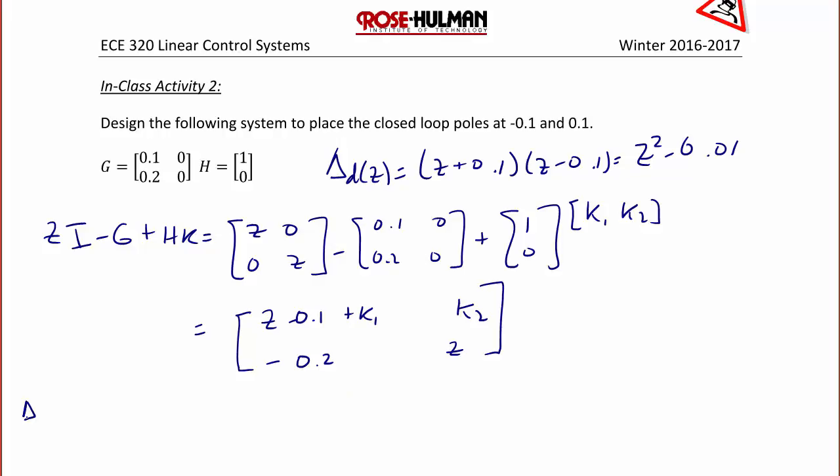Now we find the characteristic equation by finding the determinant of ZI minus G plus HK, which equals Z squared plus K1 minus 0.1 times Z plus 0.2 K2.